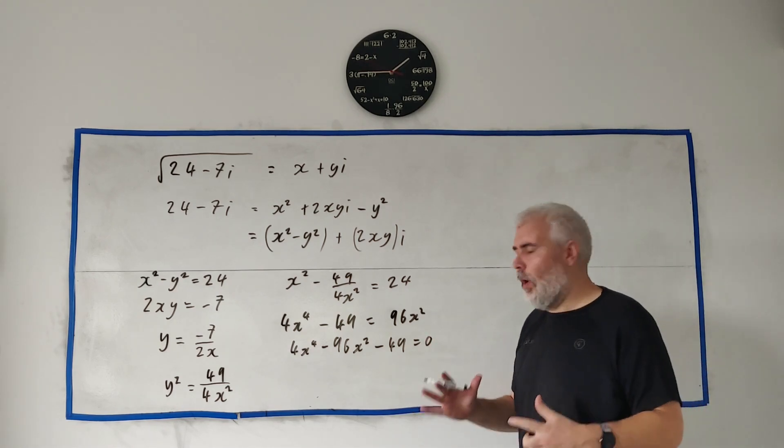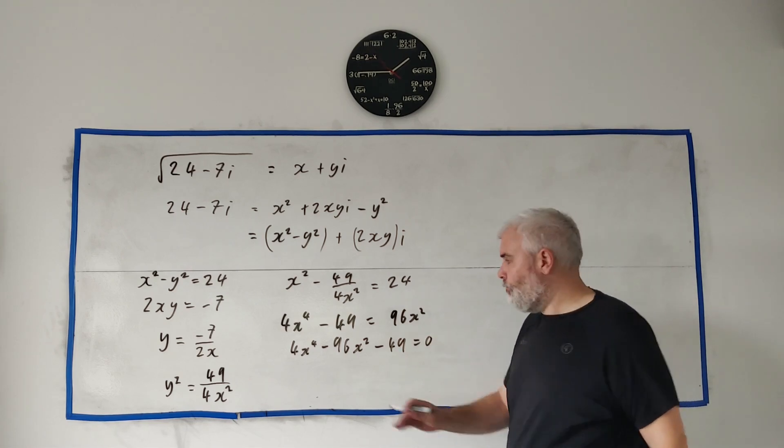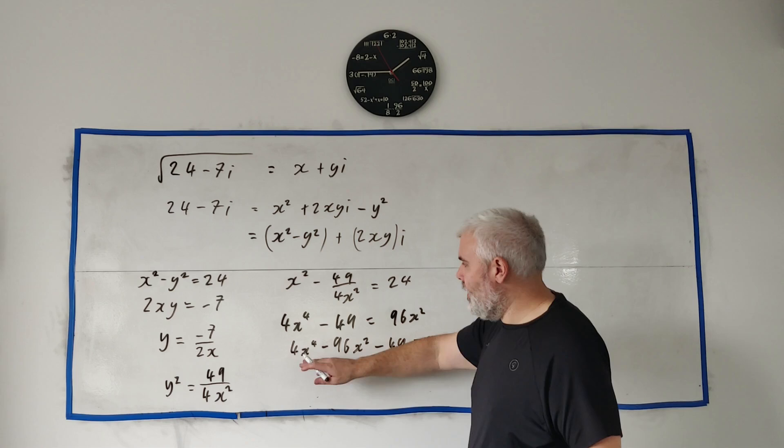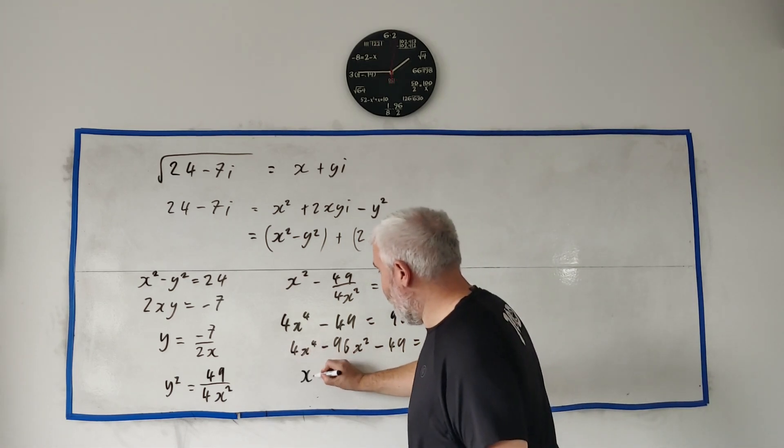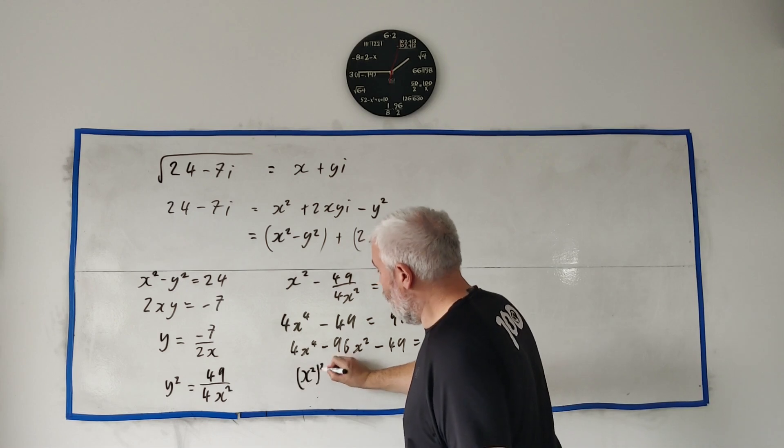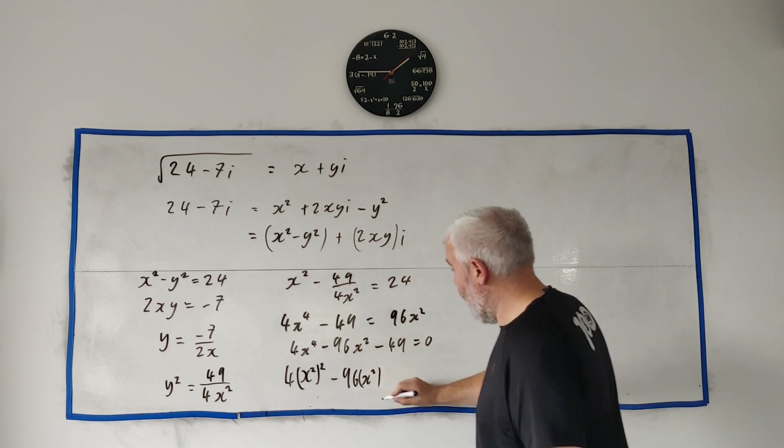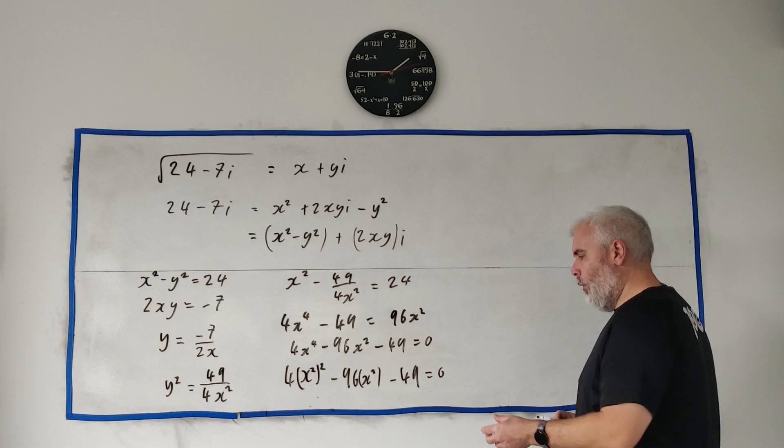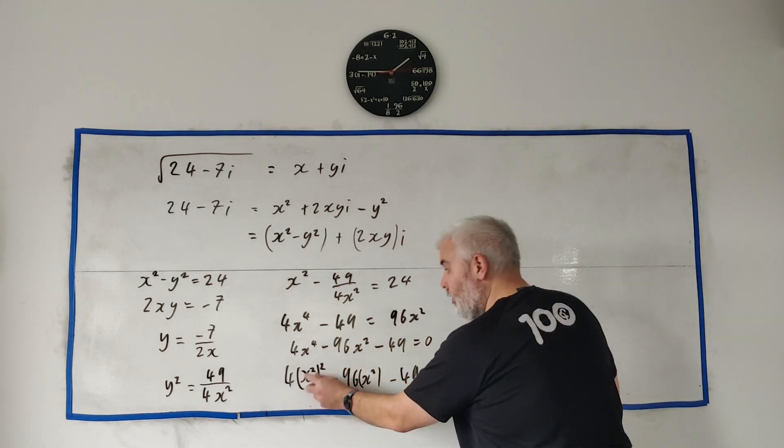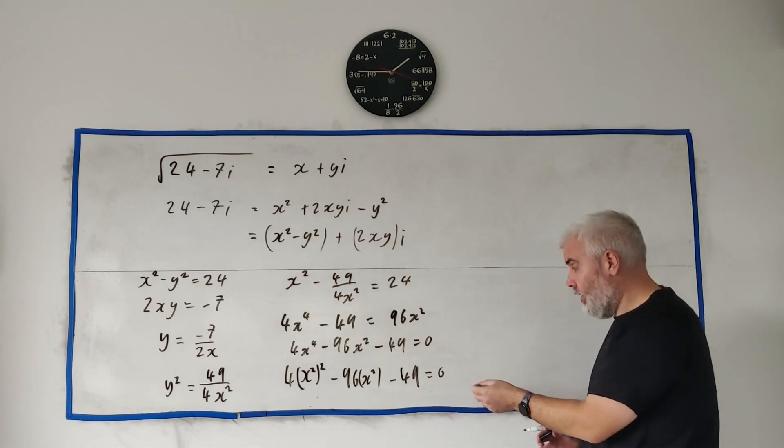Just one thing we need to notice, and it's quite common—a question to appear, so it's a good one to remember. We can set x to the power 4 as x to the power 2 squared. 4 times that minus 96 times x squared minus 49 equals zero. Look what we have here: we have x squared squared, x squared, and no x squared. That's a quadratic.